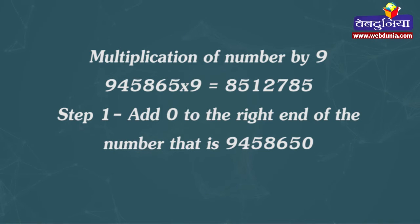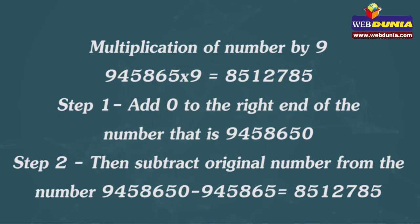Step 1: Add 0 to the right end of the number, that is 9458650. Step 2: Then subtract original number from the number 9458650. So the answer will be 8512785.